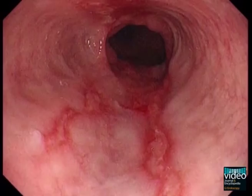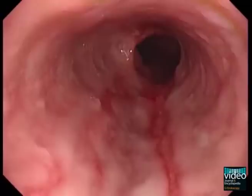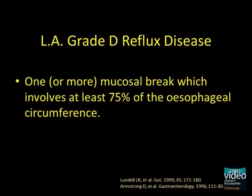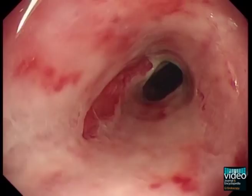LA grade D reflux disease is defined by one or more mucosal breaks that involve at least 75% of the esophageal circumference. This is demonstrated in this patient who has ulceration in the mucosa involving the whole of the circumference of the esophagus.